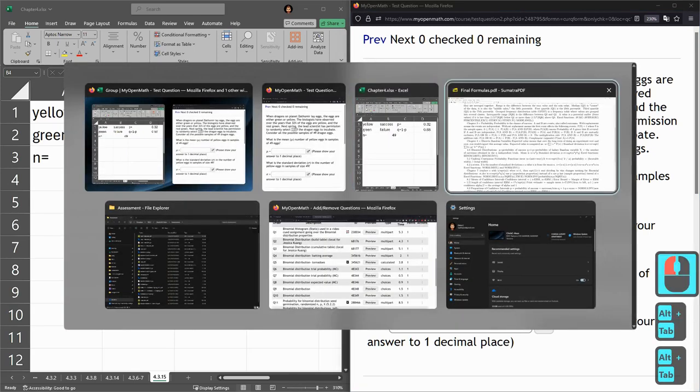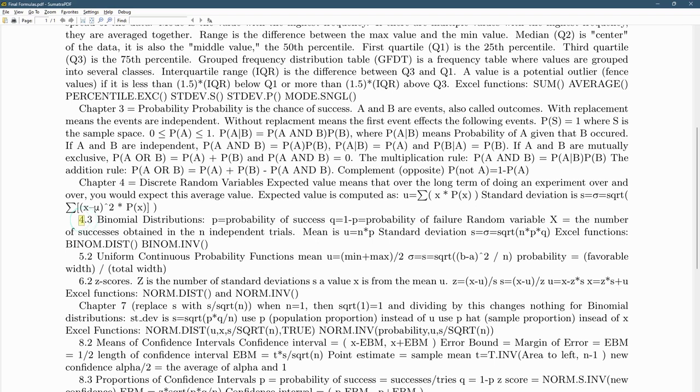But let's look at the formula here. So we're in formula page in 4.3, and we have mean is n times p. And again, n is how many trials, and p is probability of success. So mean is n times p. So let's go ahead and compute that.